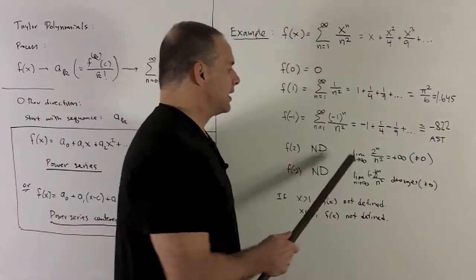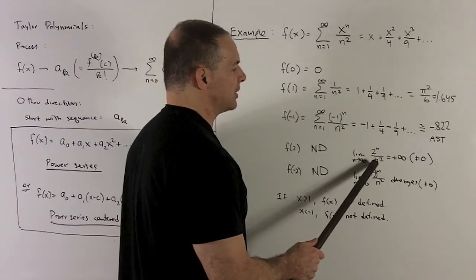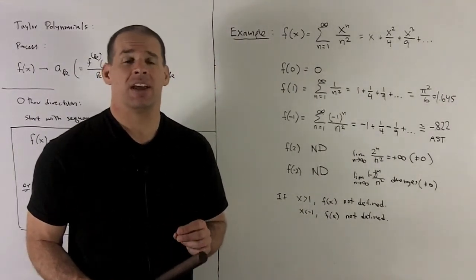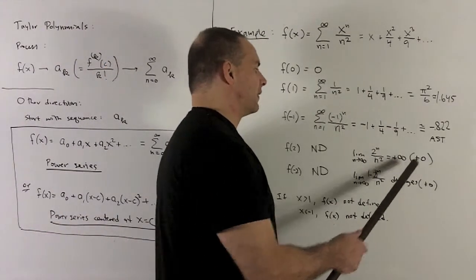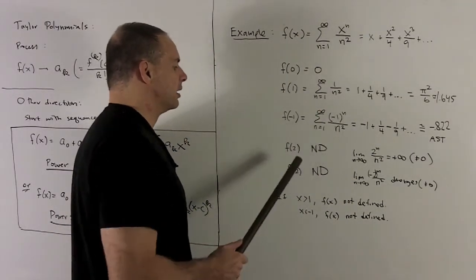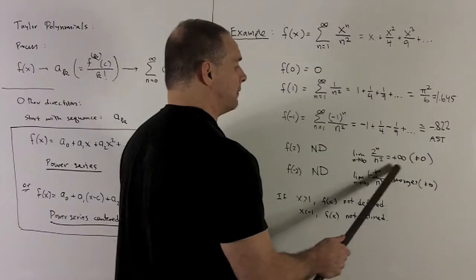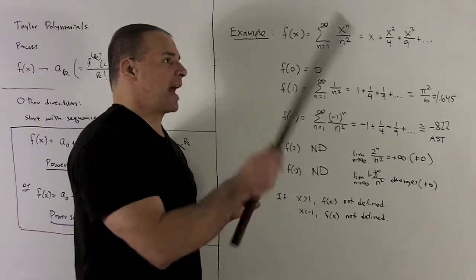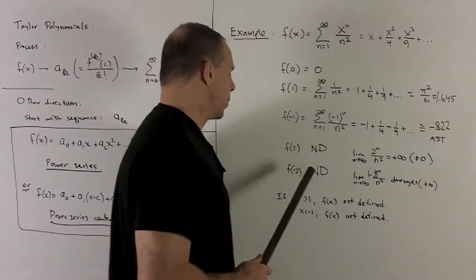Why would that happen? Well, I take the limit of n going to infinity of two to the n over n squared. You can apply l'Hôpital's rule to this twice and that's going to give you a plus infinity. And note, we have our limit test for divergence, which says convergent series have to have the limit of the sequence going to zero. So if it's going to infinity, it's definitely not going to zero. So, series diverges and so our function's not defined. Similarly, if I put a minus two in there, we get not defined. This thing's not even going to go to plus infinity, it's just going to diverge.